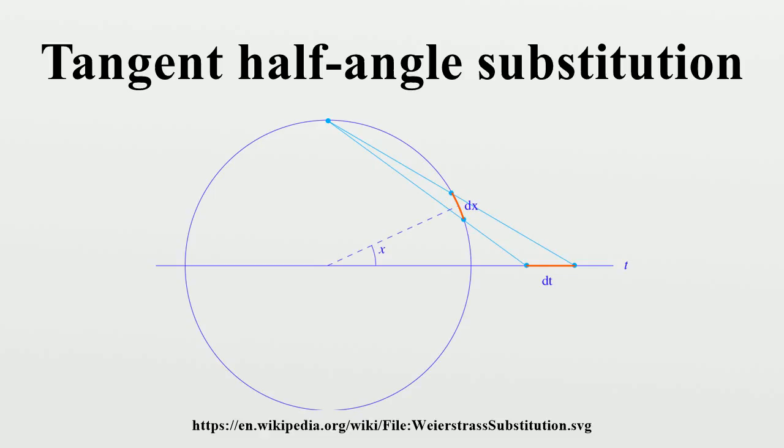As t goes from minus infinity to minus 1, the point determined by t goes through the part of the circle in the third quadrant. As t goes from minus 1 to 0, the point follows the part of the circle in the fourth quadrant.